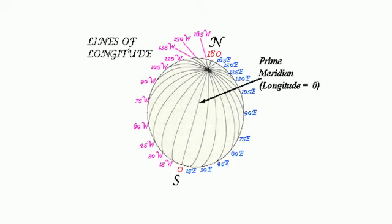Longitudes. The imaginary lines that intersect the equator at right angles, joining the north and south, are called longitudes. On the globe, longitudes are shown as a series of semi-circles that run from pole to pole passing through the equator. All lines of longitude are of equal length. Lines of longitudes are called meridians. 'Meri' means mid and 'dian' means day.